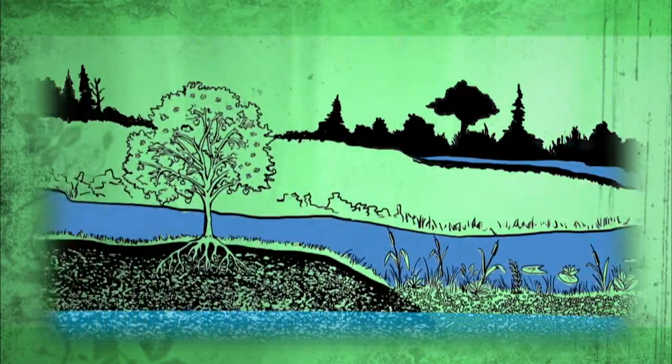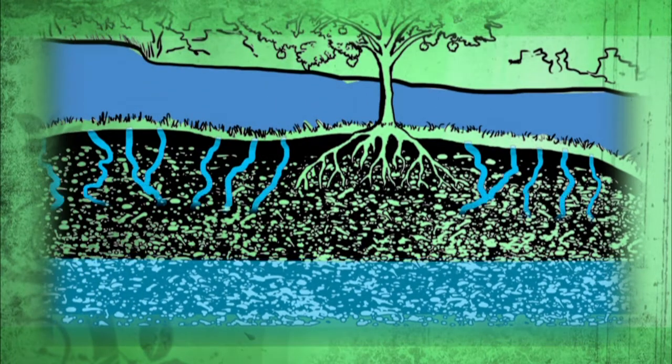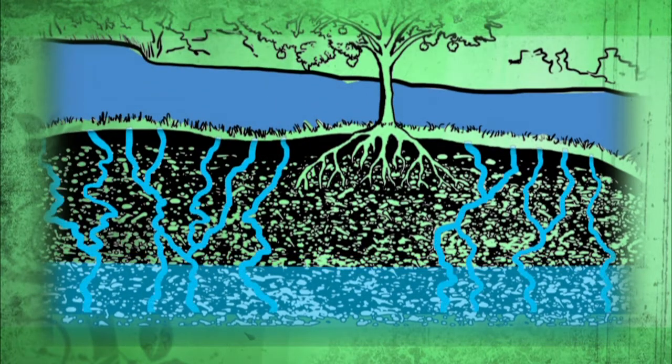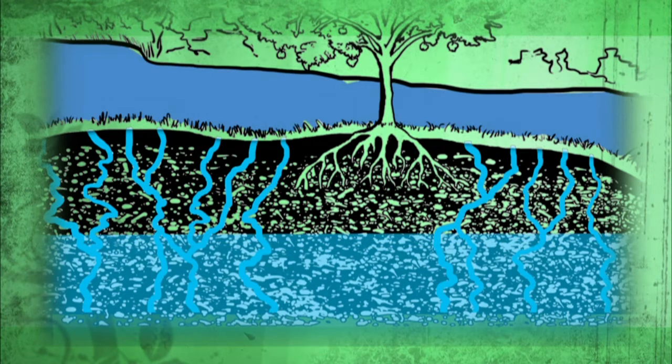But water that seeps into the ground may not return to the surface for years or even decades. Groundwater is water that soaks into the ground. It seeps downward in the pore spaces within the soil or rock until the soil is saturated or filled with water. This is called the water table.